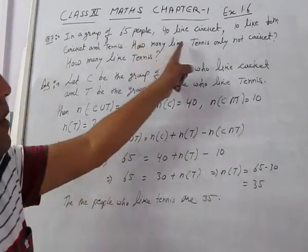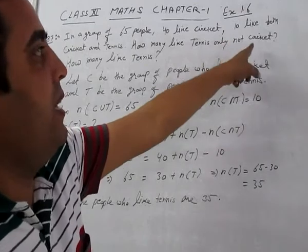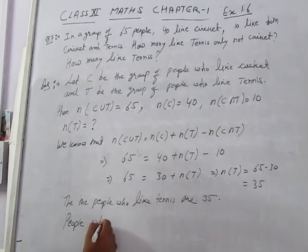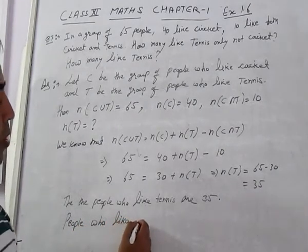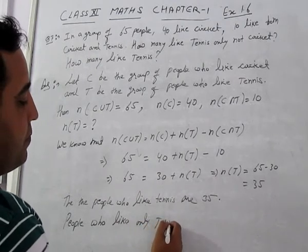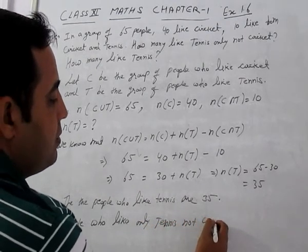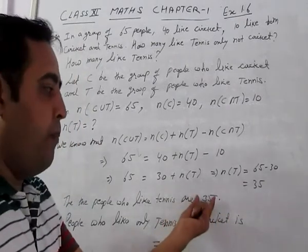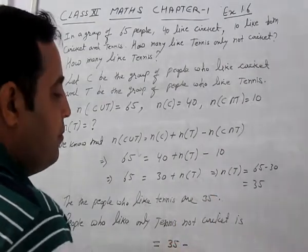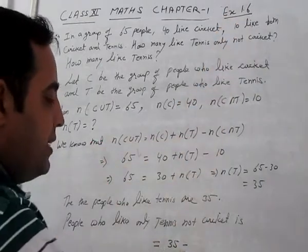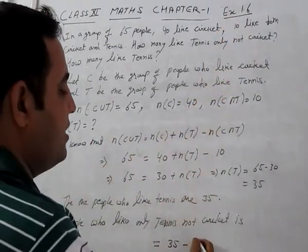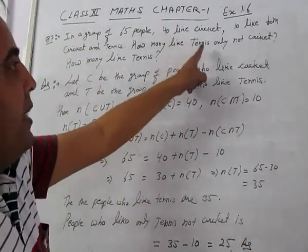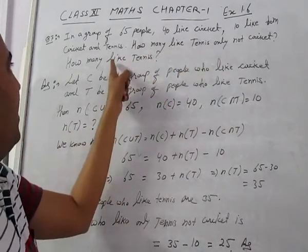Now, how many people like tennis only, not cricket? People who like only tennis (not cricket) = n(T) - n(C∩T) = 35 - 10 = 25. Therefore 25 people like only tennis, not cricket, and 35 people like tennis in total.